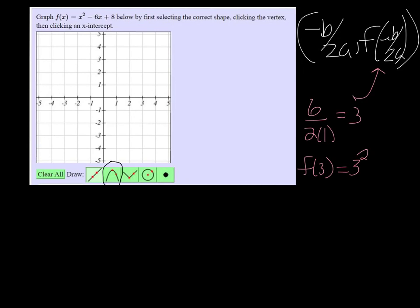So it's going to be 3 squared minus 6 times 3 plus 8. So it's 9 minus 9 plus 8, which is just 8. So my vertex is 3, 8.